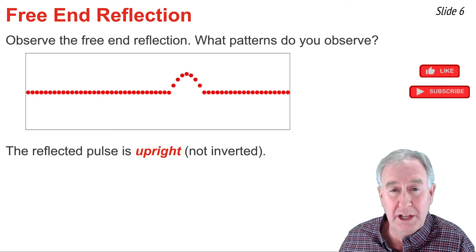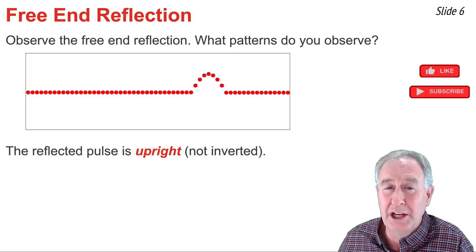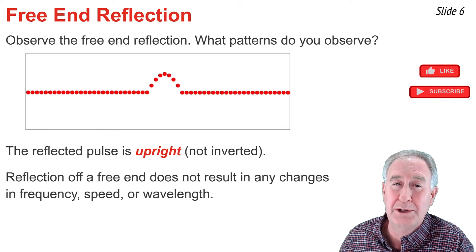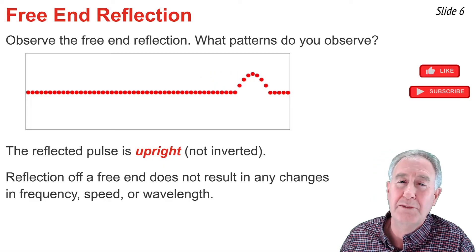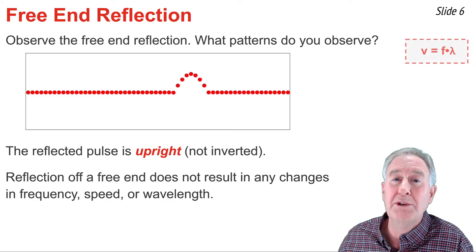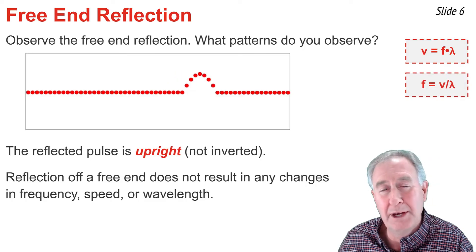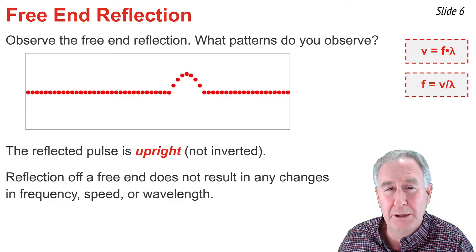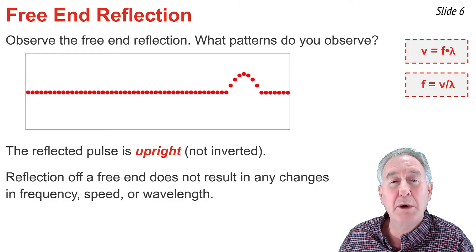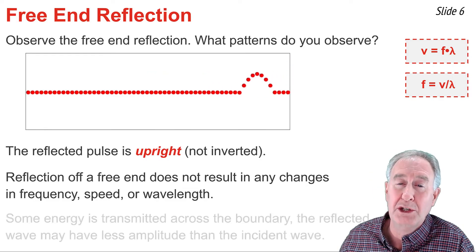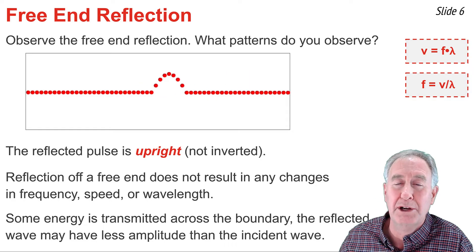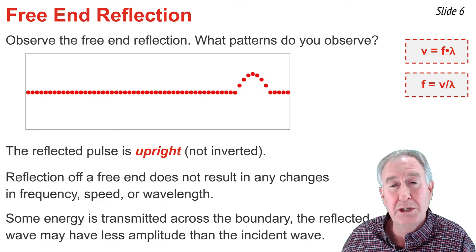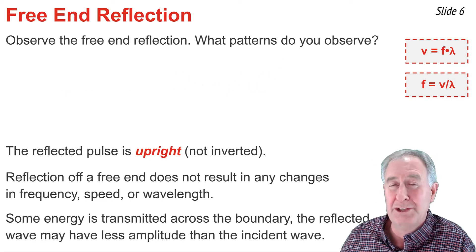The second pattern is that there is no noticeable change in the speed or the wavelength of the reflected pulse compared to the incident pulse — the same observation we made for fixed-end reflection. And since frequency depends upon speed and wavelength, we can also assert that there is no change in frequency. Finally, while it is not obvious in the animation, we would expect the amplitude of the reflected pulse to be less than the amplitude of the incident pulse, since a portion of the energy is being transmitted across the boundary.